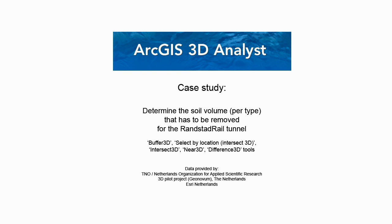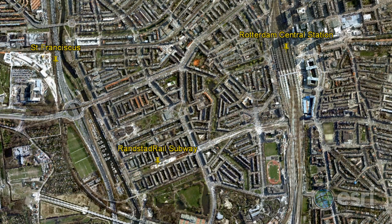In this use case we'll use 3D Analyst to calculate the volume per soil type that needs to be removed for the Randstad rail subway tunnel, seen here in red.